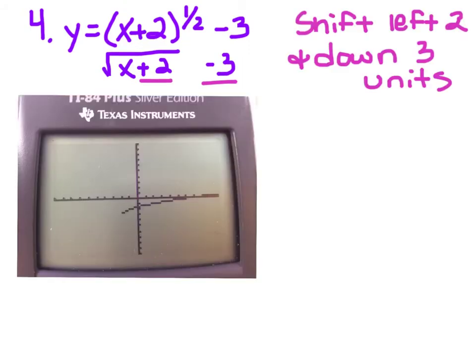Here it is in the calculator. Each home base point went left 2 and down 3: (0, 0) moved to (-2, -3); (1, 1) went left 2 and down 3; (4, 2) went to (2, -1); and (9, 3) went to (7, 0).